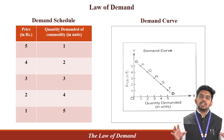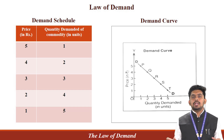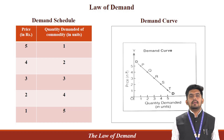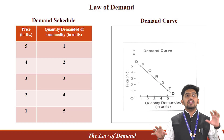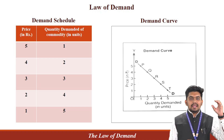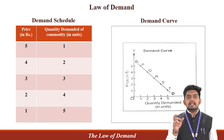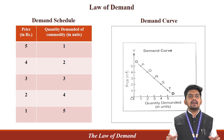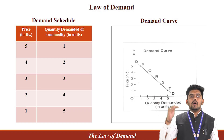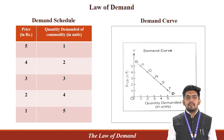Next, let's look at the demand schedule and graph. A demand schedule is a table that shows the different prices of a good and the corresponding quantity demanded. The two most important factors are price and quantity demanded. As we can see, when the price falls from five rupees to one rupee, the demand increases from one to five units. This trend is shown more clearly in the demand curve, which slopes downward from left to right, showing that as price falls, quantity demanded rises.